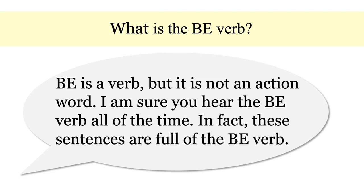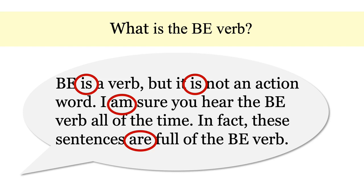Let's look. IS is a form of the BE verb. AM is also the BE verb. And ARE is also a form of BE.